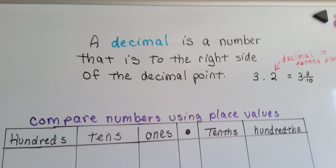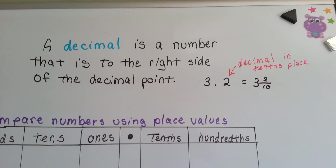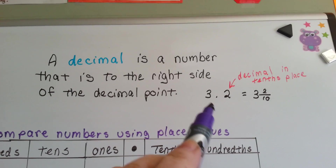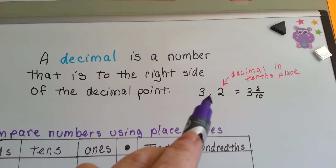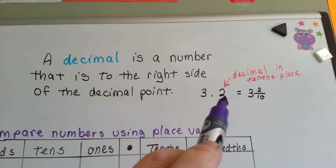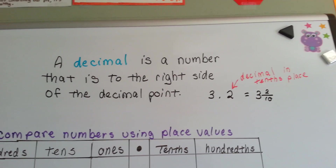Alright, let's do a quick review. A decimal is a number that is to the right side of the decimal point. Here's the decimal point, and that's the decimal — two-tenths. This is three and two-tenths.